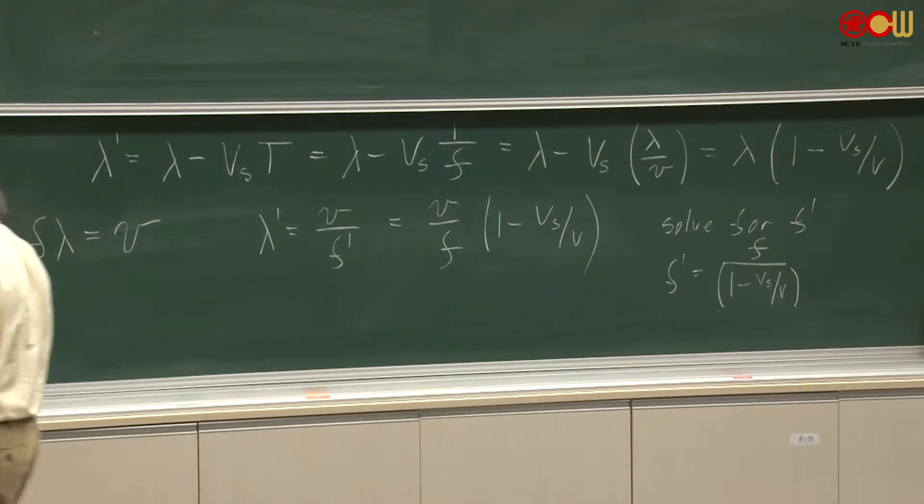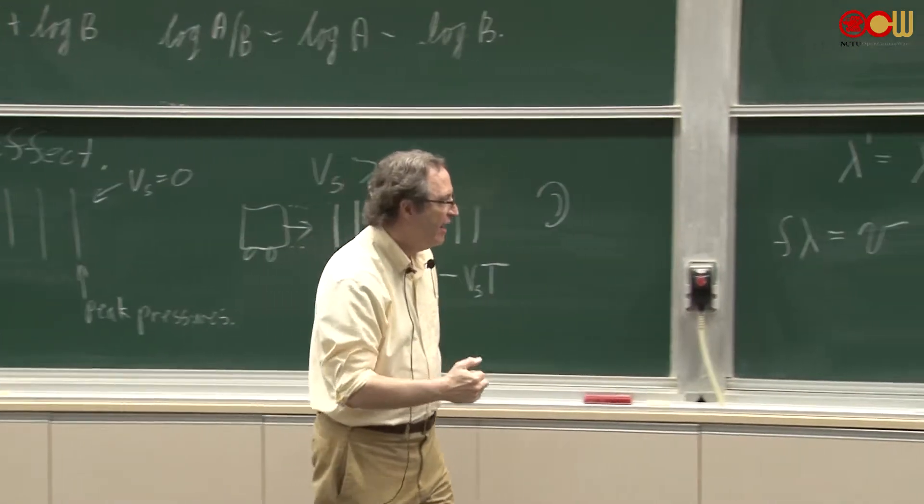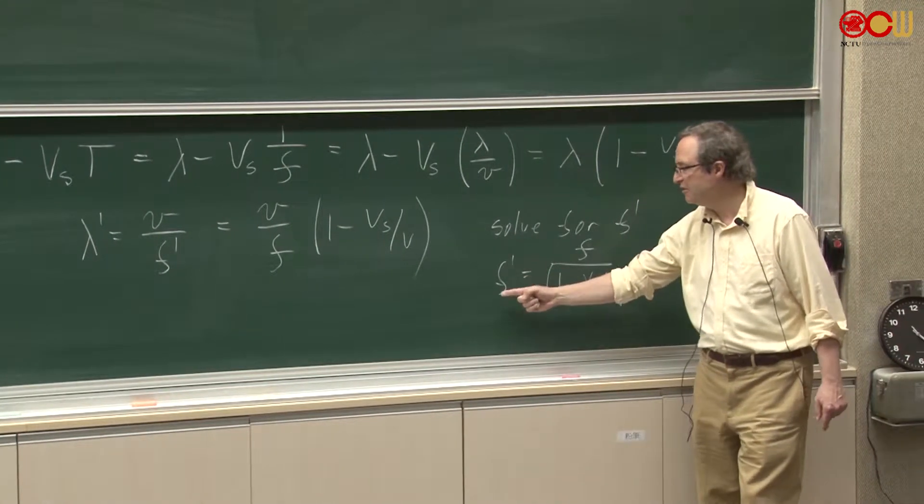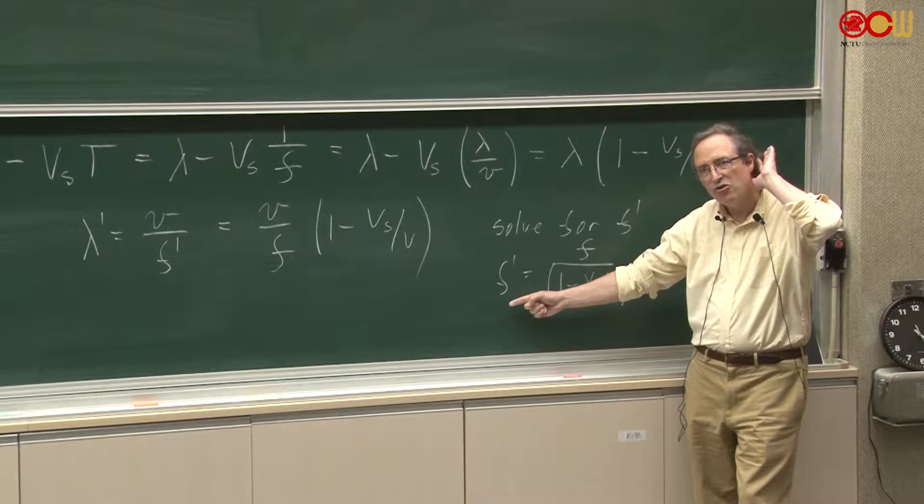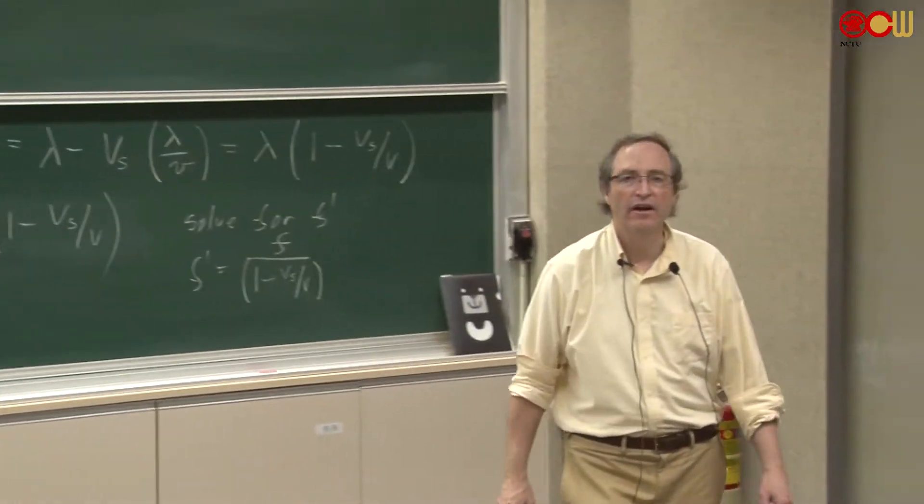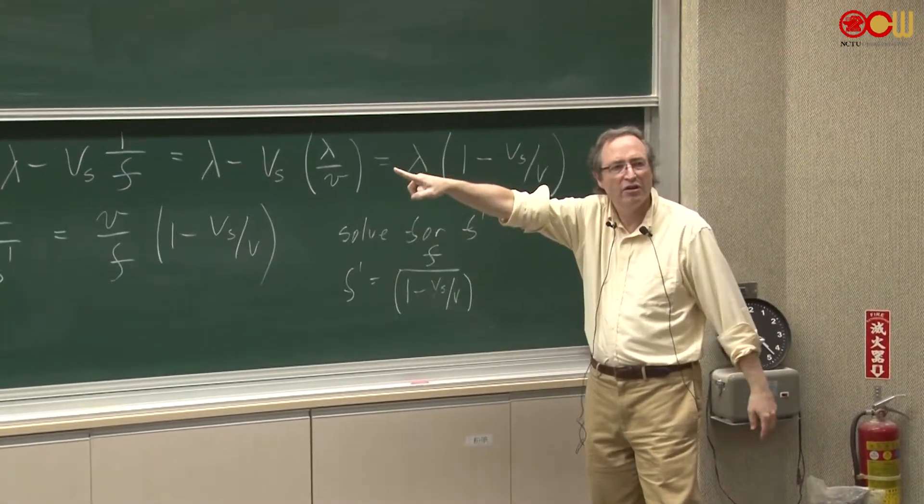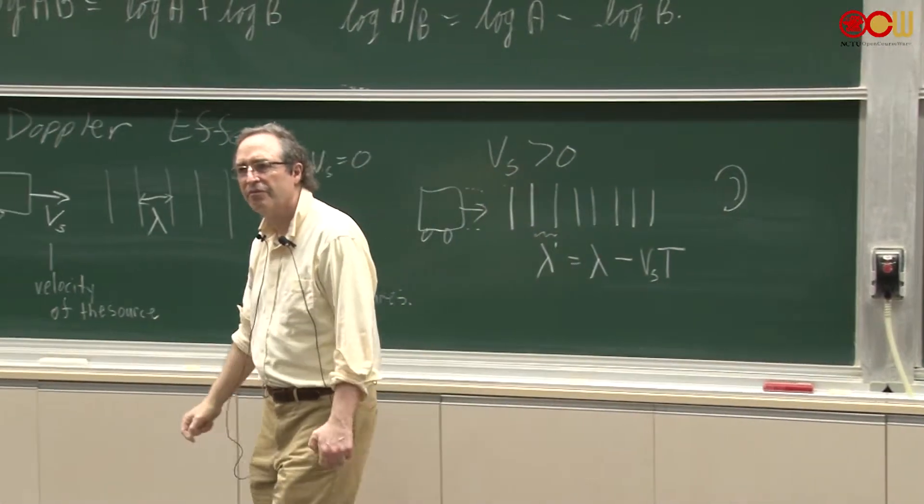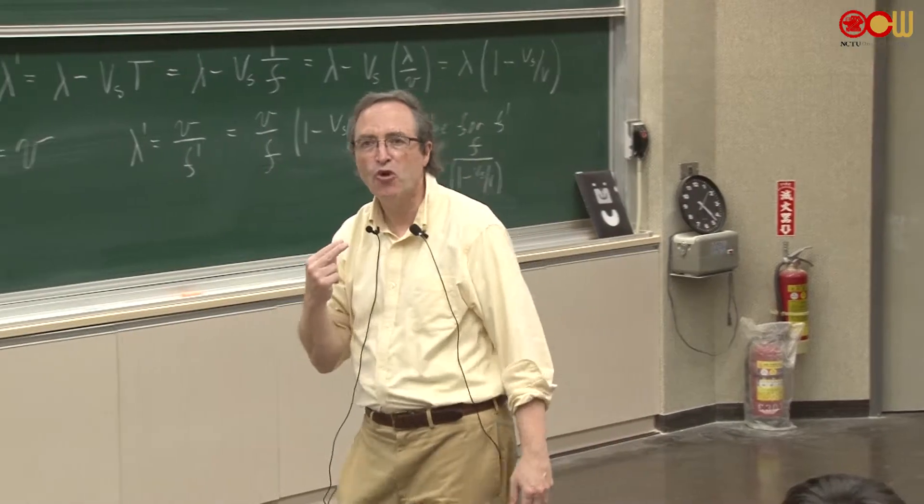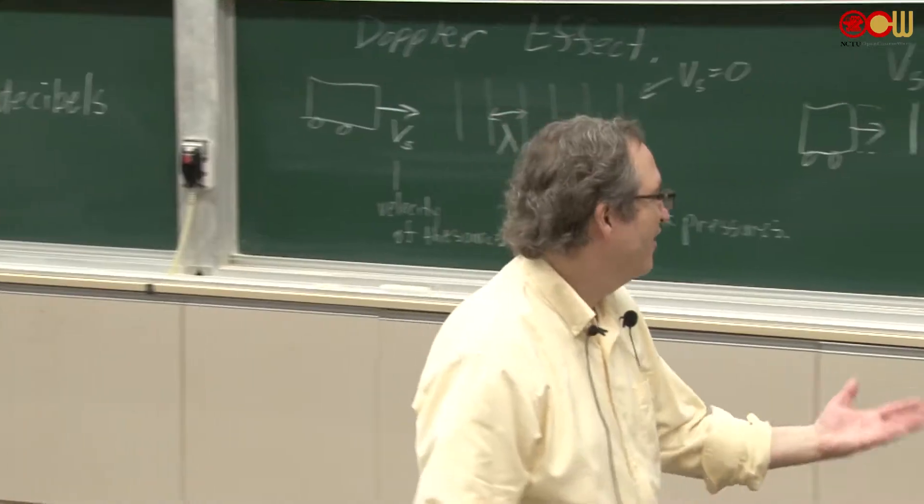So in this case, the train is moving towards the observer. And what happens to the frequency? Does the frequency go up or down? This is the observed frequency. This is what you hear. This is what was put out. Is the observed frequency higher or lower? Higher, right? Because v s is positive the way I wrote it there. I used v s greater than zero. So the denominator is smaller, the frequency goes up. And that's what happens. Train coming towards you, its frequency will go up. It'll go from, let's say, to something like that. So that's what it is.